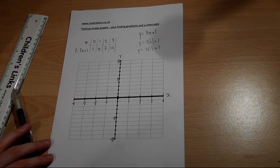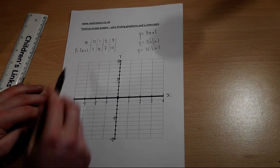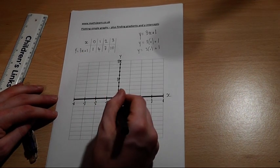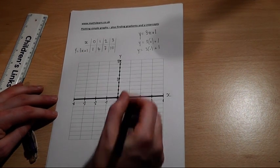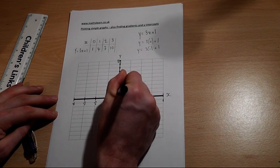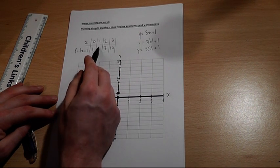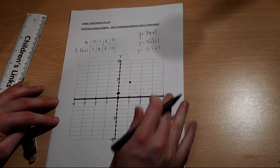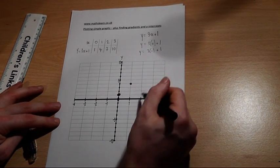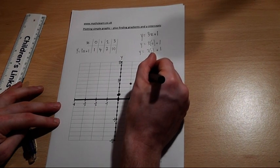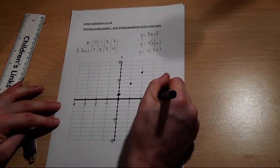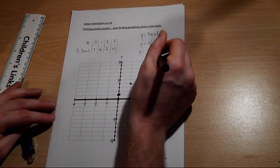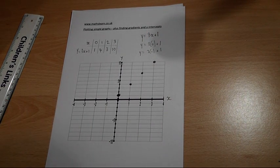Anyway, we can now plot these coordinates. So x is 0, y is 1. x is 1, y is 4. 2, 7. 3, 10. And these form a perfect straight line.